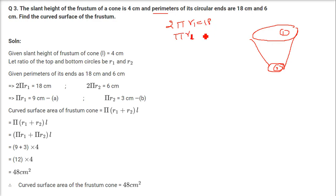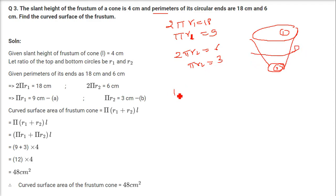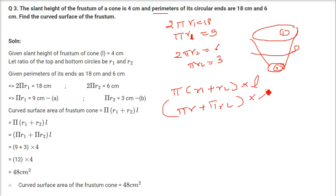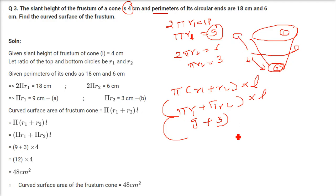And 2πr2 = 6, so πr2 = 3. The curved surface area = π(r1 + r2)·L = (πr1 + πr2) × L = (9 + 3) × 4 = 12 × 4 = 48 cm².